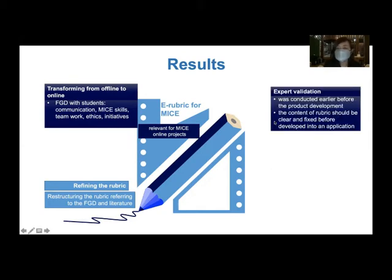The expert validation had some results that it should have been done earlier before the product development, because if we did the other way around, it would be difficult for us to go back and forth to the IT expert. We should have made this ready first, then continue to the development of digital rubric. We also consider that the content or criteria of the rubric should be clear and fixed before we give it to the IT expert to make the application.